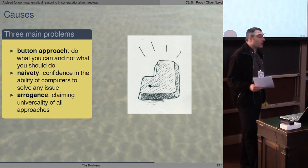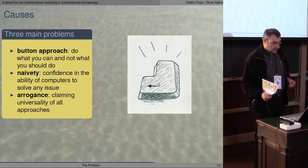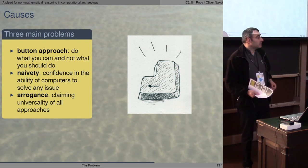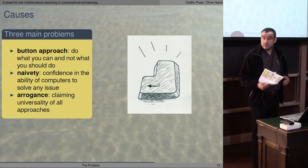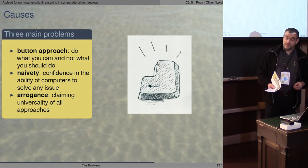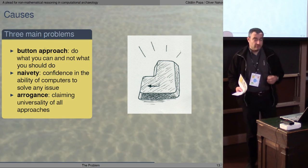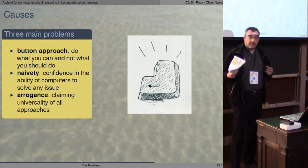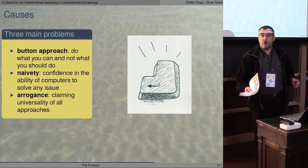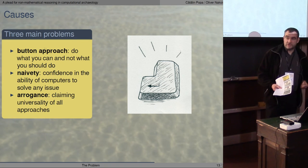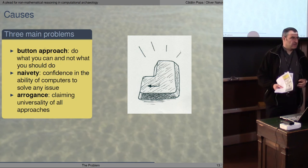There is also a certain degree of naivety — we are confident that computers will solve all issues we have. And the third point is a certain degree of arrogance: we usually claim universality of all our approaches, which is of course a little bit strange.